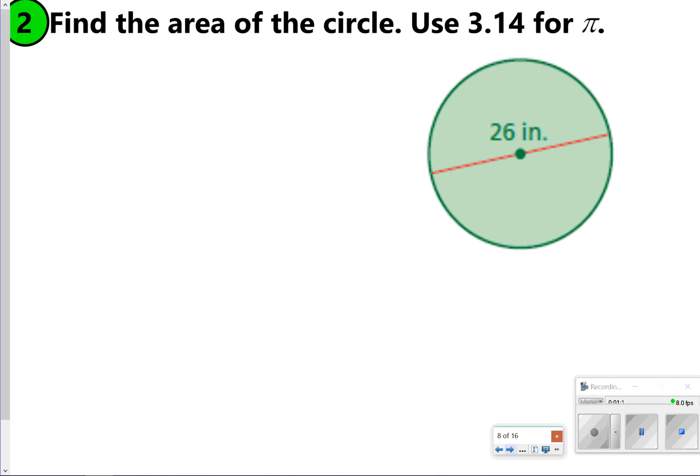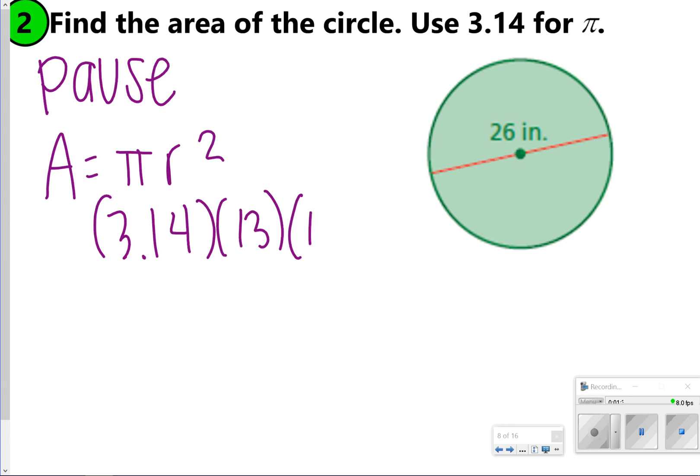Sometimes you're going to be given a diameter like this in number 2, so just be careful when you're solving this one. Let's go ahead and pause the video now so you can try number 2 on your own. You should have gotten A = π times radius squared, that's 3.14 times 13 times 13. Once you fill that in, you should get 530.66 inches squared.